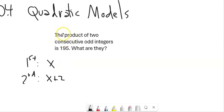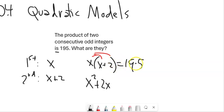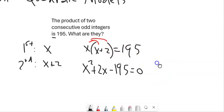Product means multiplication. The product of them, so x times x plus 2, is 195. And now I have an equation to solve. So I just translated this statement from English into math. And now I'm going to solve it. Distribute that x into there. And then let's subtract 195 from both sides.